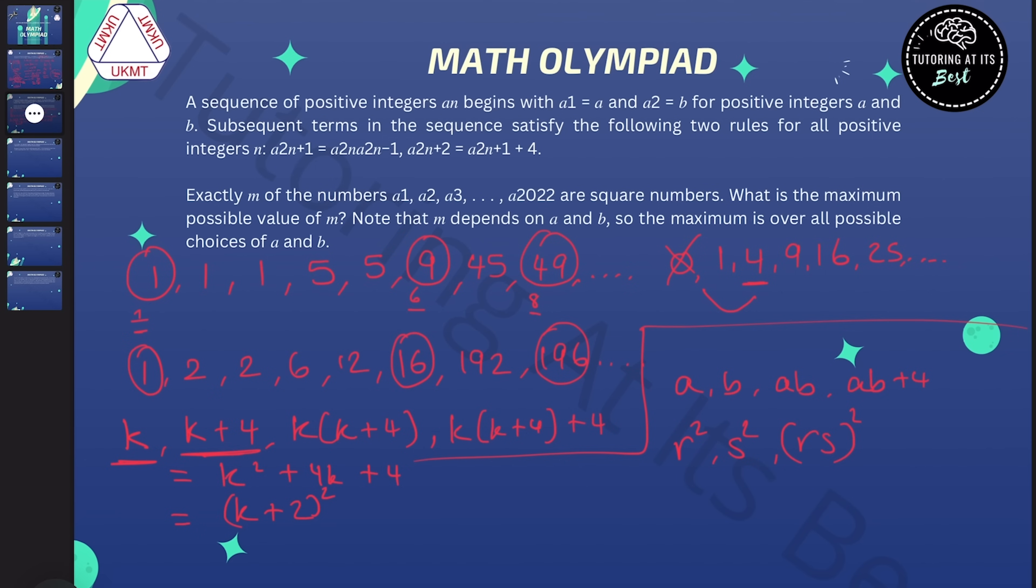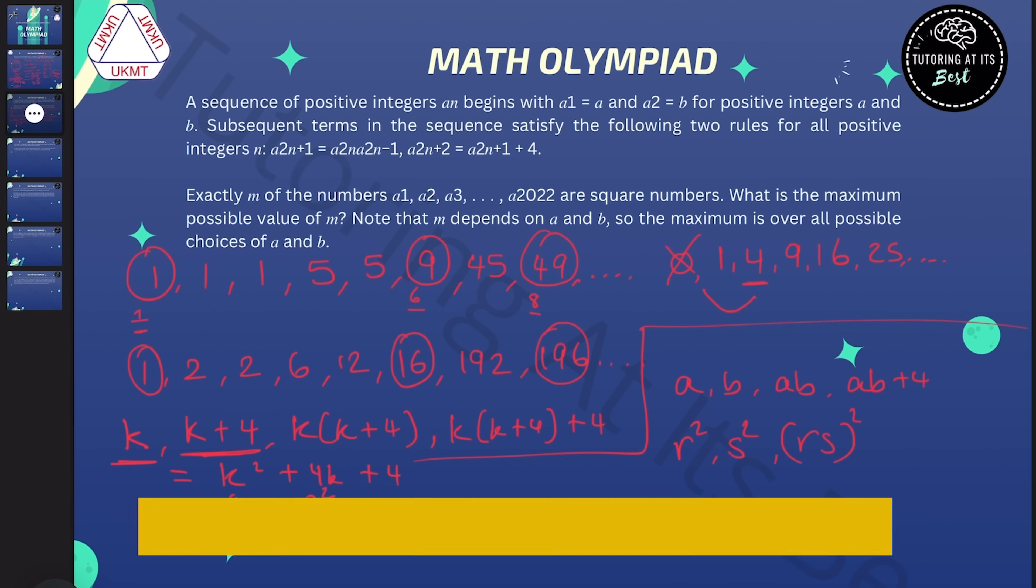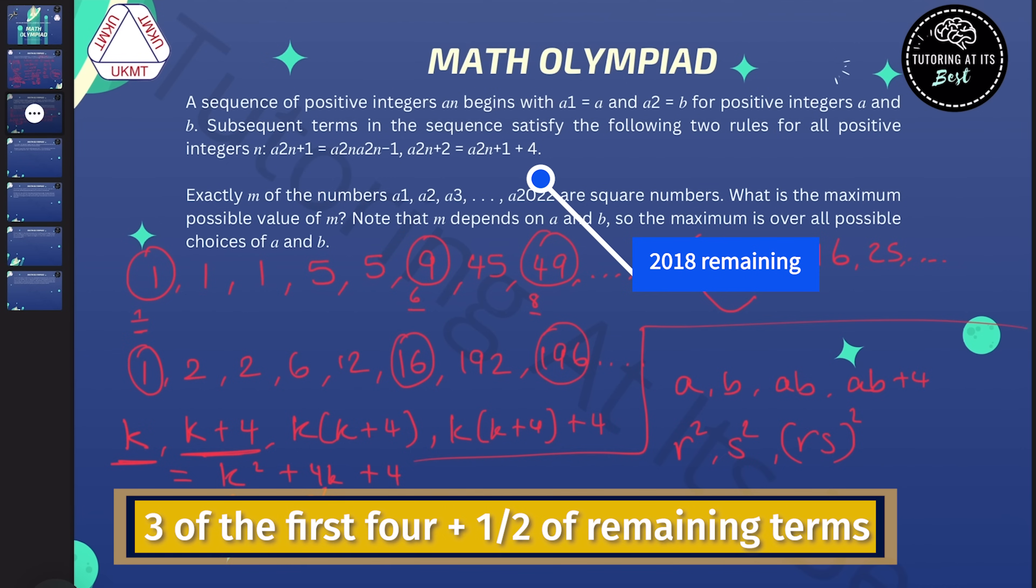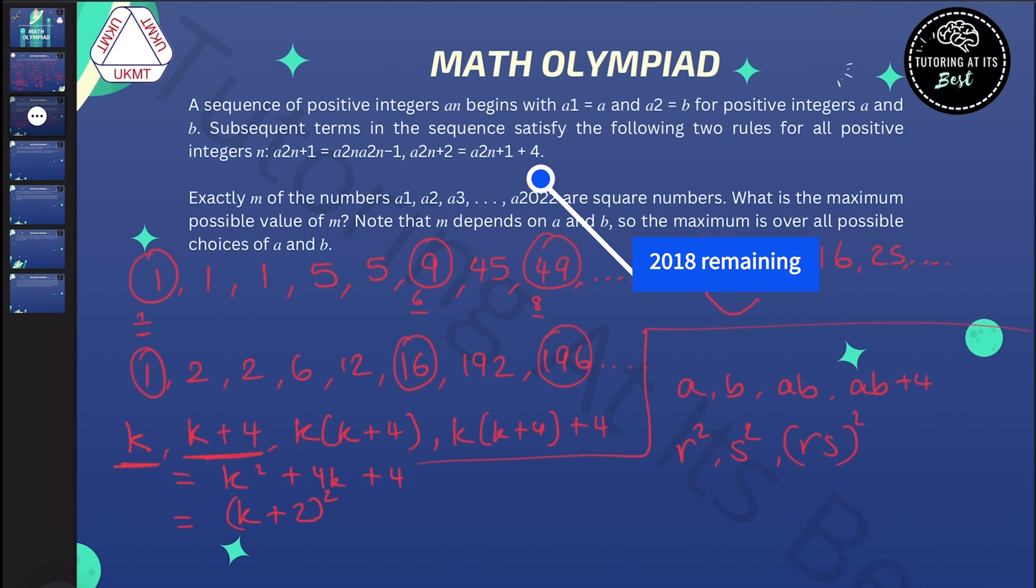So the maximum number of squares possible in the sequence consists of three of the first four plus half of the remaining 2018 terms. And to reiterate, the reason we've got 2018 is because we've worked with the first four terms. So that's going to be three plus half of 2018, which is 1009, and that gives us 1012. And that is the max possible number of squares.